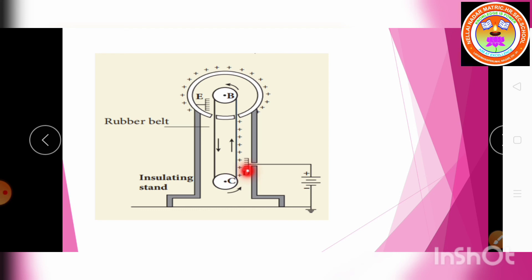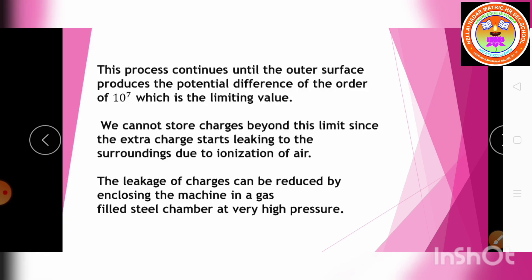At the bottom, a large positive potential is created again, and the belt goes up delivering positive charges to the sphere. This process continues until the outer surface produces a potential difference of the order of 10⁷ volts, which is the limiting value. Beyond this, extra charges start to leak to the surroundings due to ionization of air.